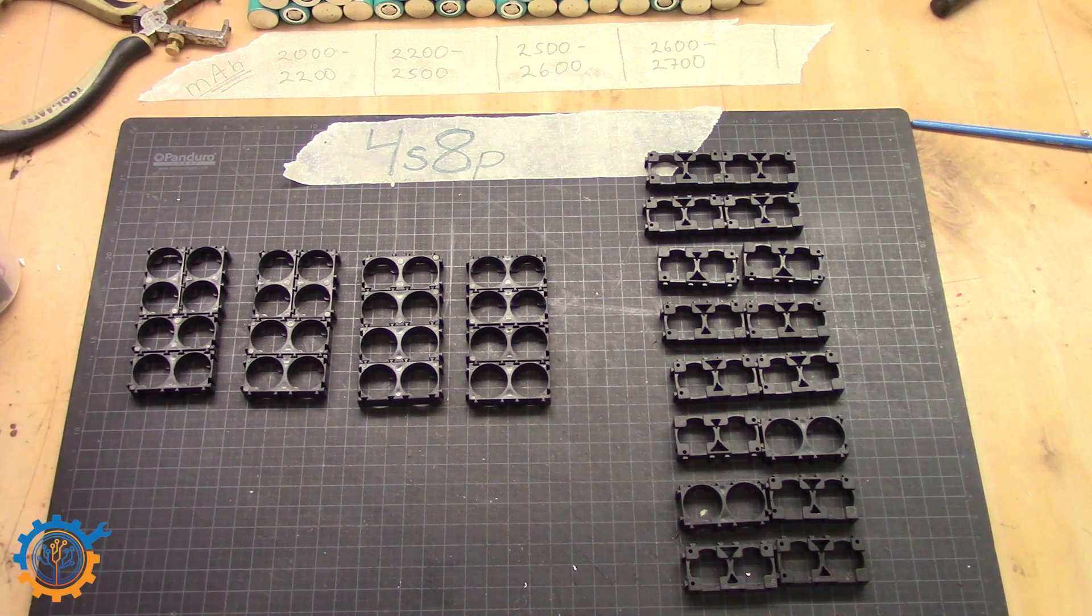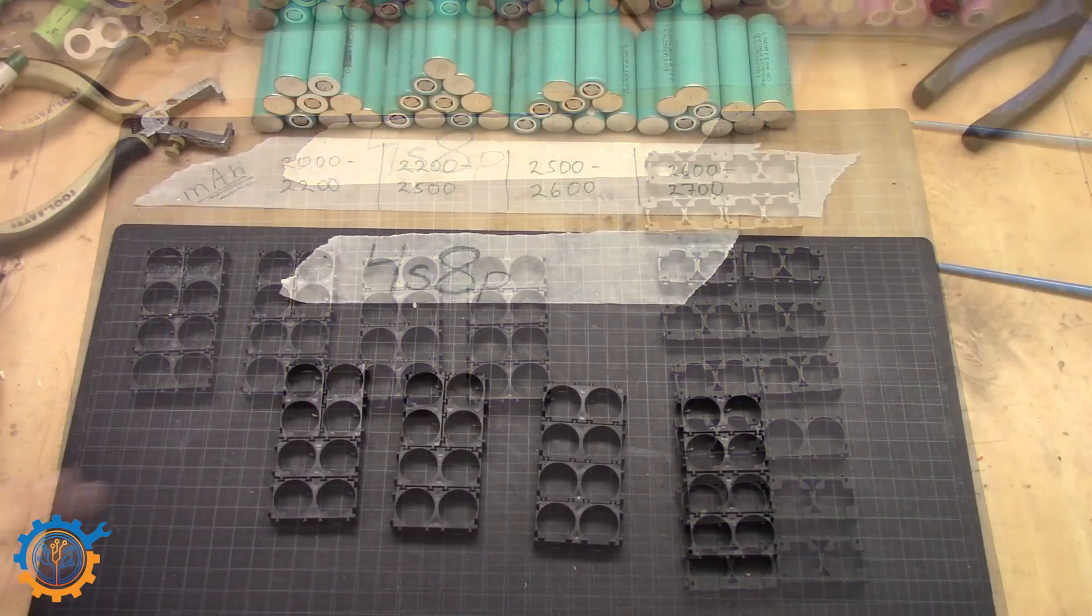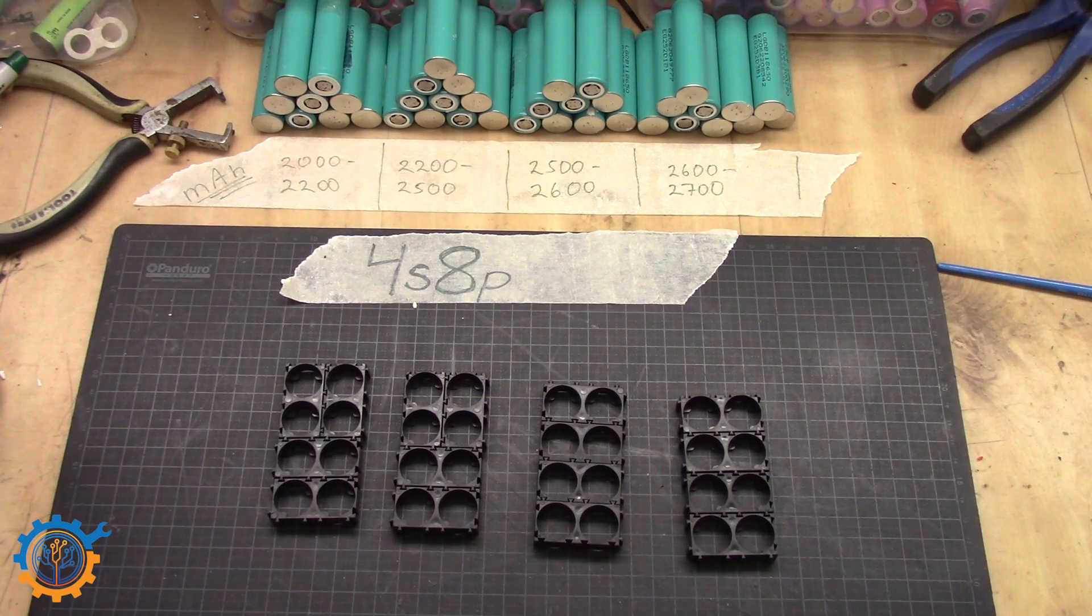So basically what we are building is this layout. You start with the series and end with the parallel. As I said in the beginning, if you want to understand how you define the number of cells that you need and everything, check the other video out. I have links down below. Today we are only going to show you how I arrange the cells.